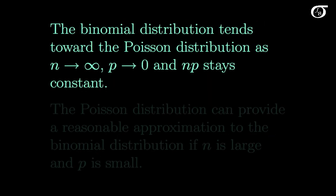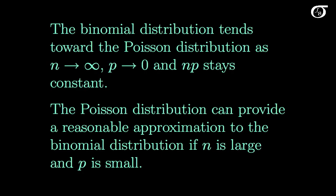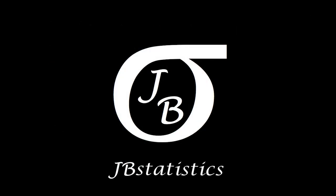One more thing: there is a relationship between the binomial distribution and the Poisson distribution. The binomial distribution tends toward the Poisson distribution as n tends to infinity, p tends to zero, and n times p stays constant. As such, the Poisson distribution can provide a reasonable approximation to the binomial when n is large and p is small. Quite often the real underlying situation is truly a binomial with a very large n and very small p, and we model it using the Poisson distribution as an approximation. The Poisson distribution is sometimes described as a distribution to model rare events.